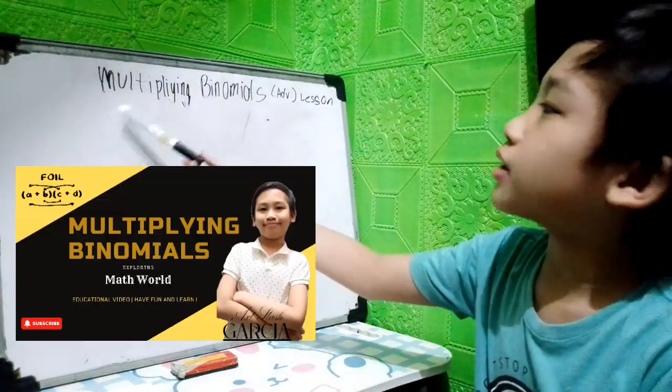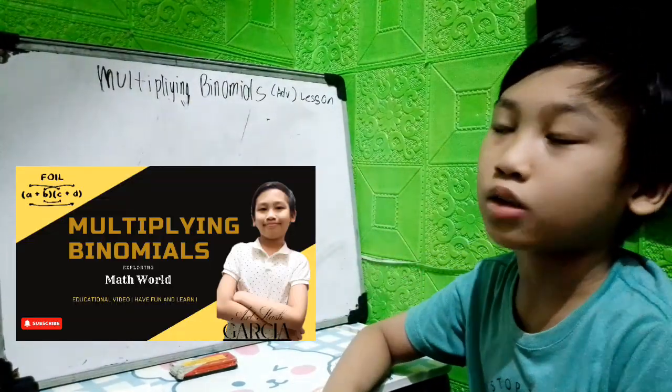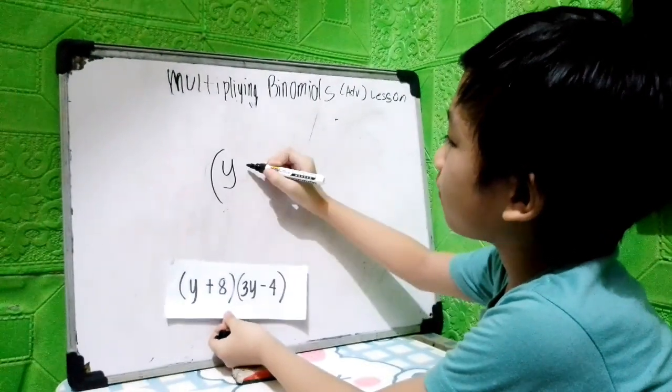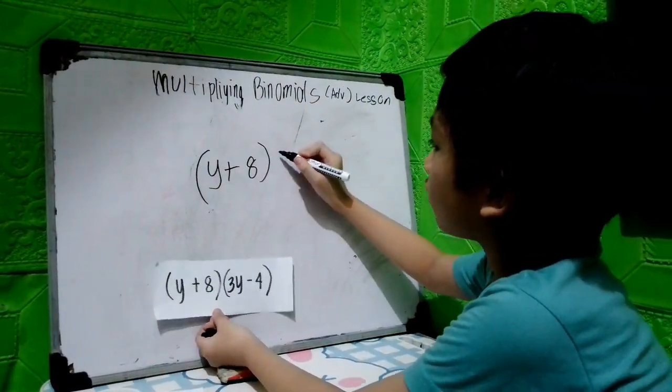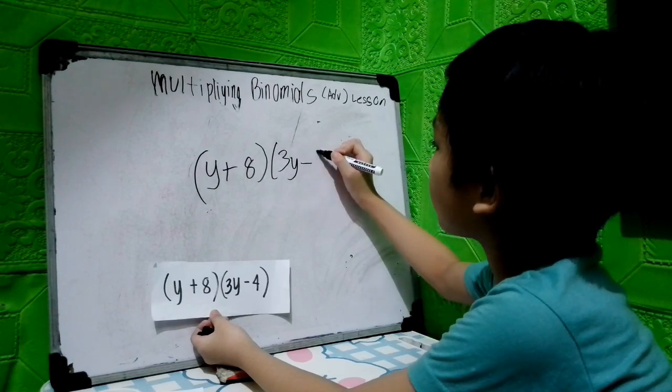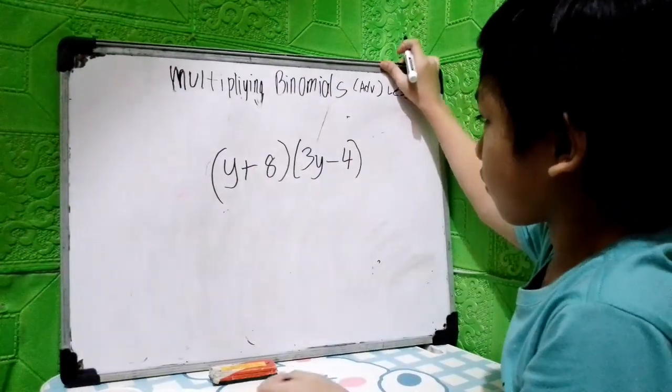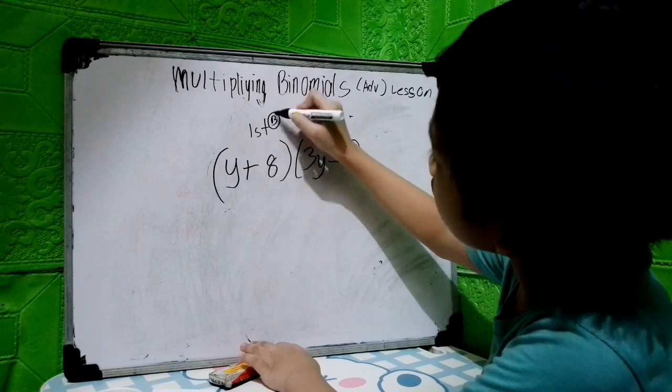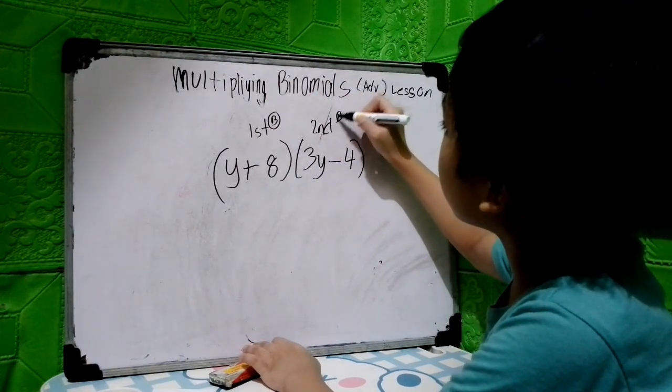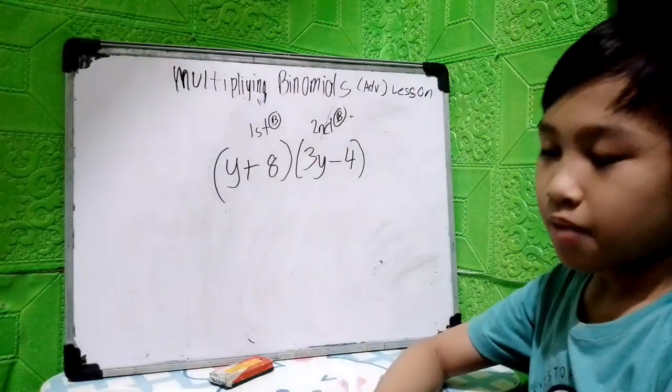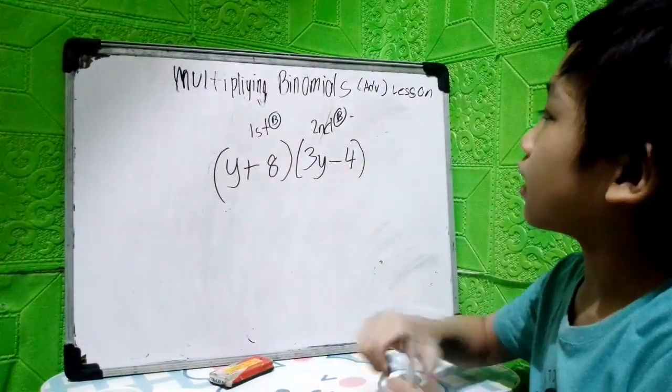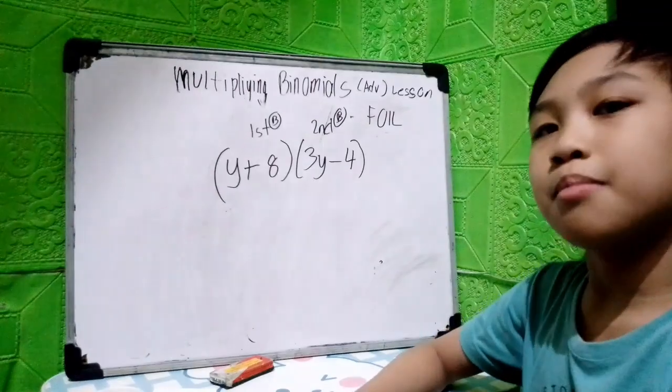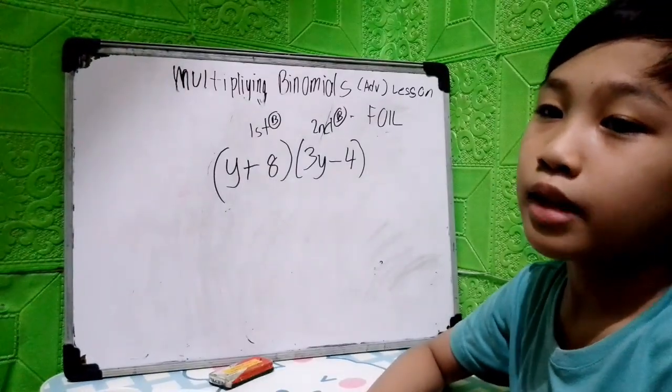Our topic for today is Multiplying Binomials Advanced Lesson. Our example for today is y plus 8 times 3y minus 4. This one is our first binomial and then the second binomial. There are 3 methods to multiply binomials. For today's video, we will be doing the FOIL method. Other methods will be discussed or shared in the next video.